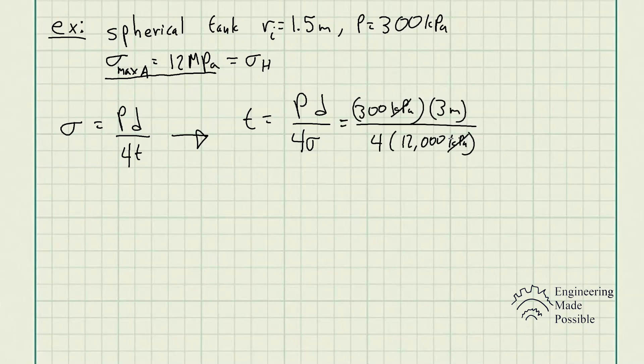So we have 300 kilopascals times 3 meters, which is 2 times the internal radius to find the diameter, divided by 4 times 12,000 kilopascals. Keep in mind, keeping uniform units so they can cancel. We get a wall thickness required of 0.01875 meters or 18.75 millimeters. And this is how you solve.